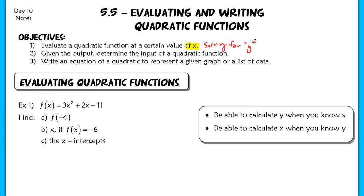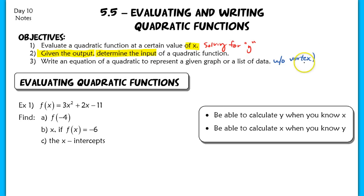The second objective is the exact opposite: given the output — the y value — determine what the input or x value of the quadratic function is. Then our last objective is to write an equation of a quadratic that represents a given graph or list of data, without being given the vertex. We've already written quadratic functions when given a vertex; now we'll do it without one, so there's a different method for this.